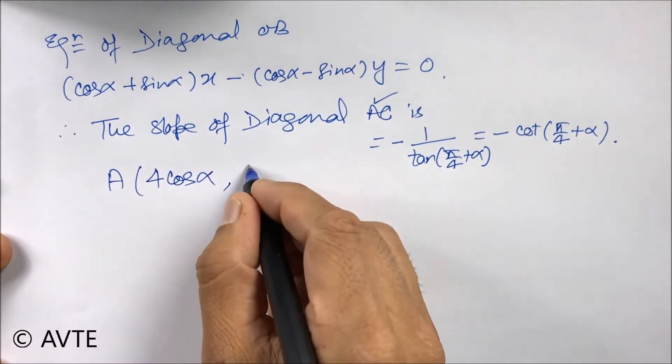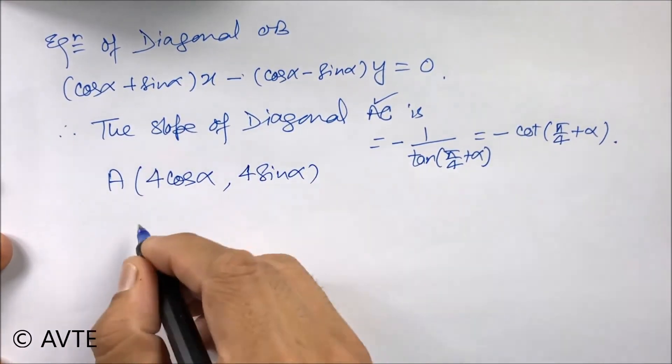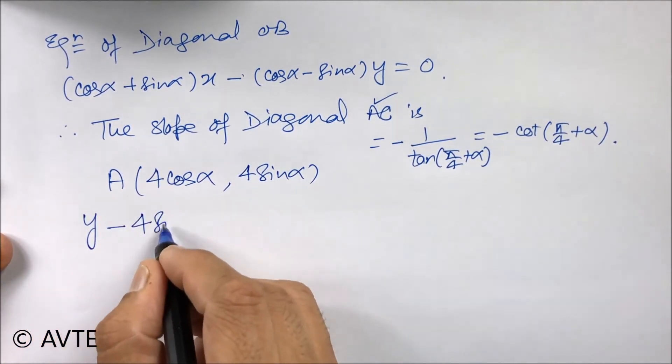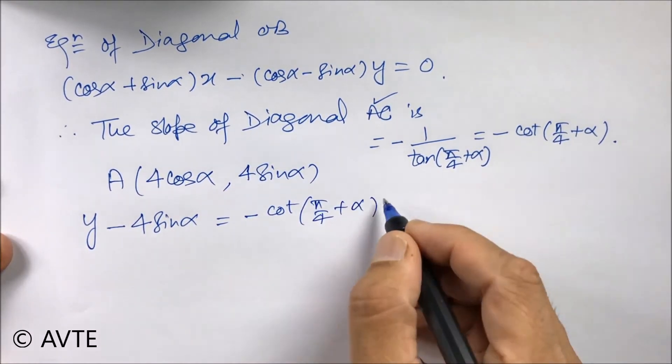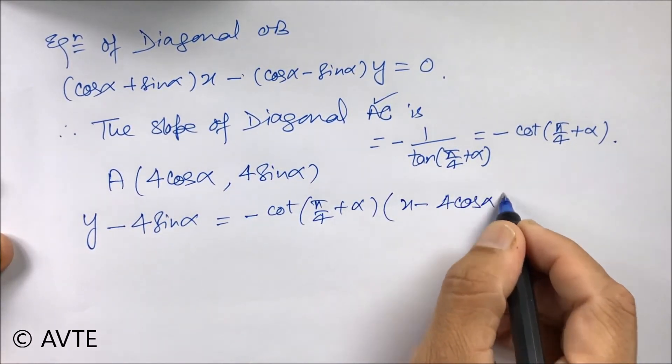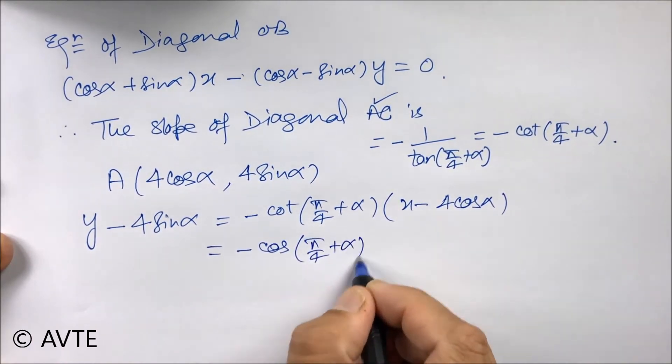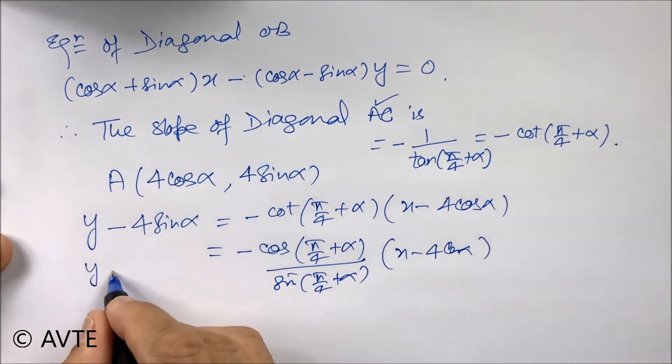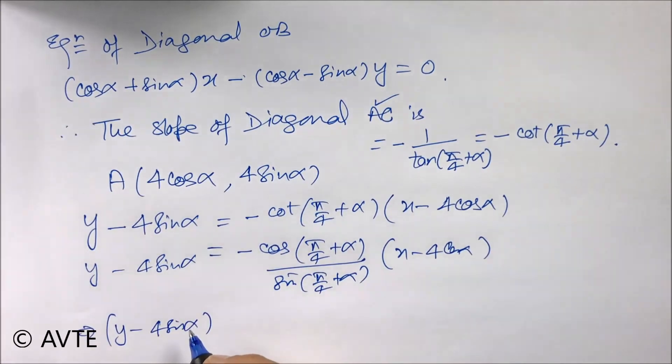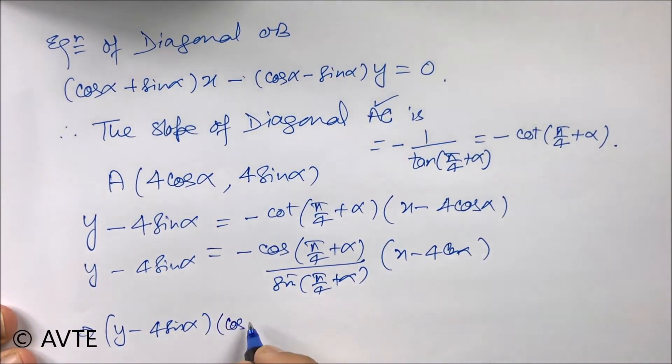And using point A, if you remember point A, it is 4 cos alpha comma 4 sin alpha. Again we can use the one point form and we can apply the equation.